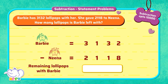To find the total number of lollipops Barbie is left with, we have to subtract 2,118 from 3,132. That is 3,132 minus 2,118.